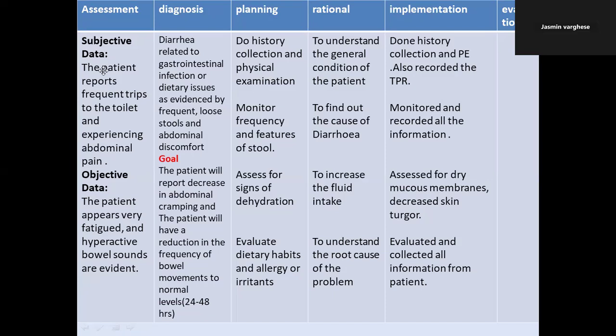In the assessment column, we write subjective data and objective data. Subjective data is what the patient reports or says about their condition. Objective data is what you have observed from the patient's present situation. Here, the subjective data is: the patient reports frequent trips to the toilet and experiencing abdominal pain. The objective data is: the patient appears very fatigued and hyperactive bowel sounds are evident.